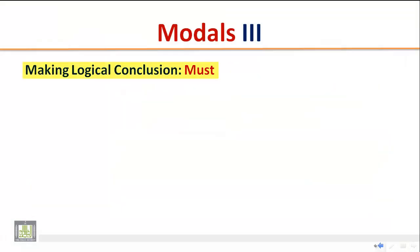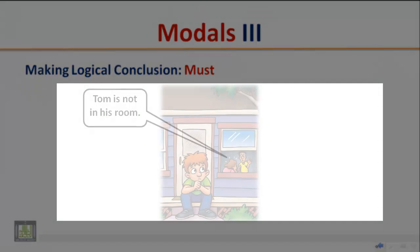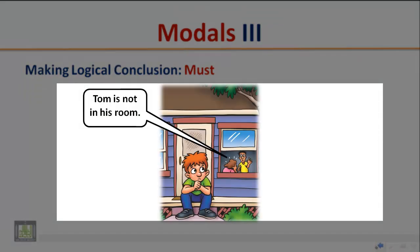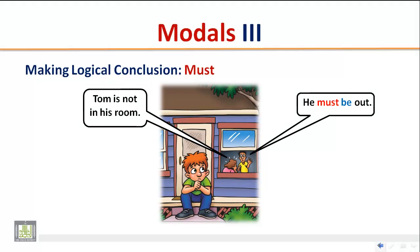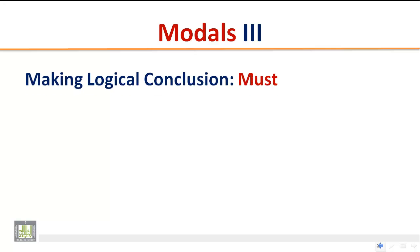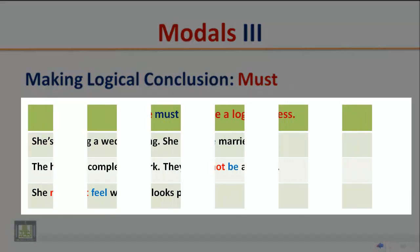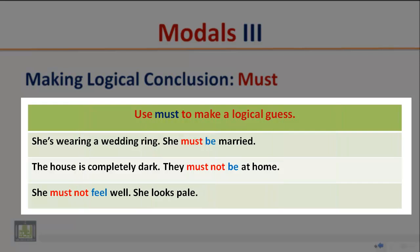Making a logical conclusion with 'must'. Listen to the following sentence and pay attention to the modal auxiliary. 'Tom is not in his room — he must be out.' Use 'must' to make a logical guess. Examples: 'She's wearing a wedding ring — she must be married.' 'The house is completely dark — they must not be at home.'